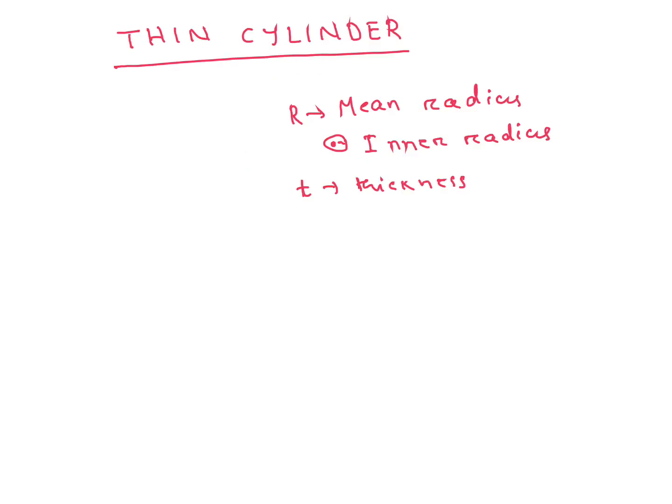The most important topic here is the thin cylinder. A thin cylinder is defined when R is greater than 10 times T, where R is the mean radius or inner radius and T is the thickness.